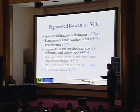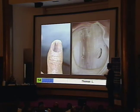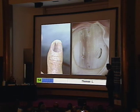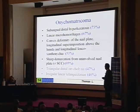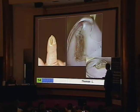Bowen's disease is a difficult diagnosis in some cases, but it is often polychromatic: we have red, white, and gray, along with a triangular erosion and hyperkeratosis underneath the nail plate. These features help make the diagnosis of Bowen's disease.